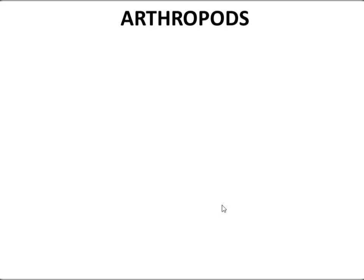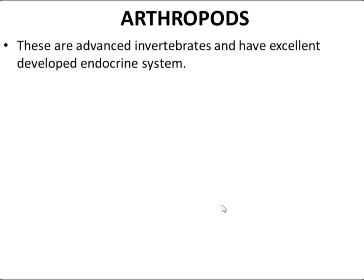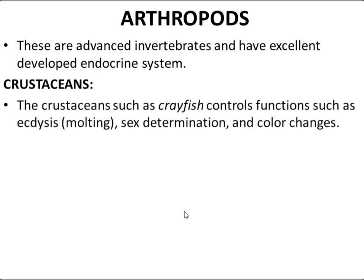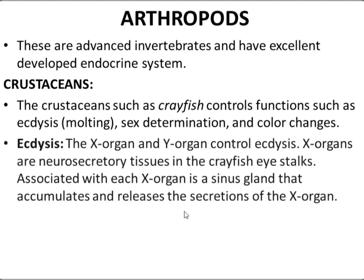The arthropods are advanced invertebrates and have a well-developed endocrine system. In case of crustaceans such as the crayfish, the endocrine system controls functions such as ecdysis, sex determination, and color changes. We will now discuss the process of ecdysis in crustaceans.